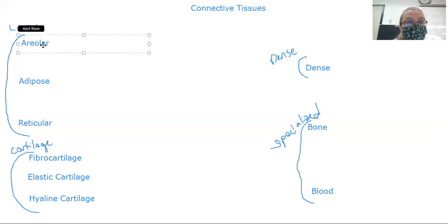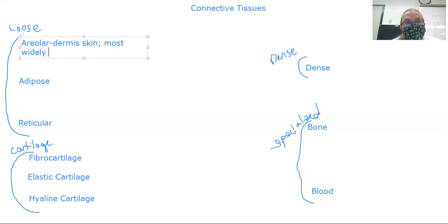The areolar, this one is what you see in the dermis of the skin. So it's underneath the skin, like deep through it. It is loosely packed, got quite a bit of collagen in it and it soaks up excess fluids, provides cushioning and it binds tissues together. And it's also the most widely distributed. So it's very common throughout the body and you're going to see it kind of everywhere.